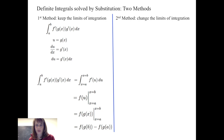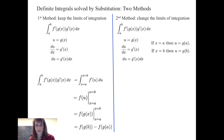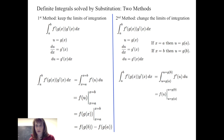Method 2 — change the limits of integration. Same integral, same substitution u = g of x, du = g prime of x dx. Now if x = a, then u = g of a; if x = b, then u = g of b. Put those in as the new limits of integration after making the substitution. Once you find the anti-derivative f of u, simply evaluate at g of b and g of a to get the same result.